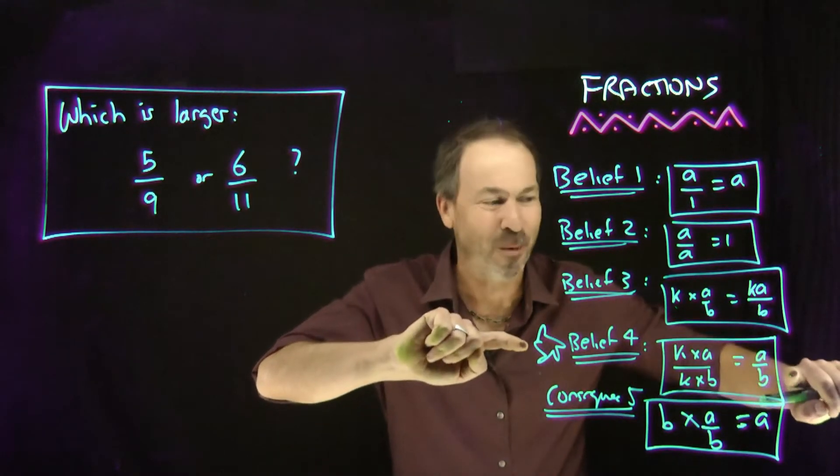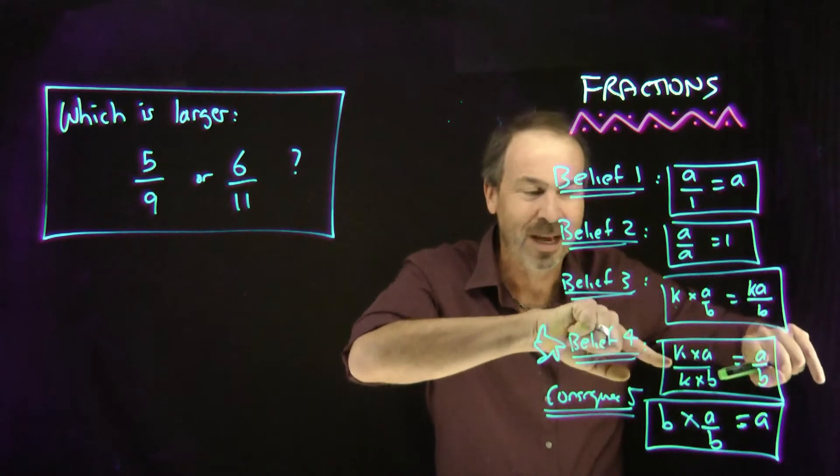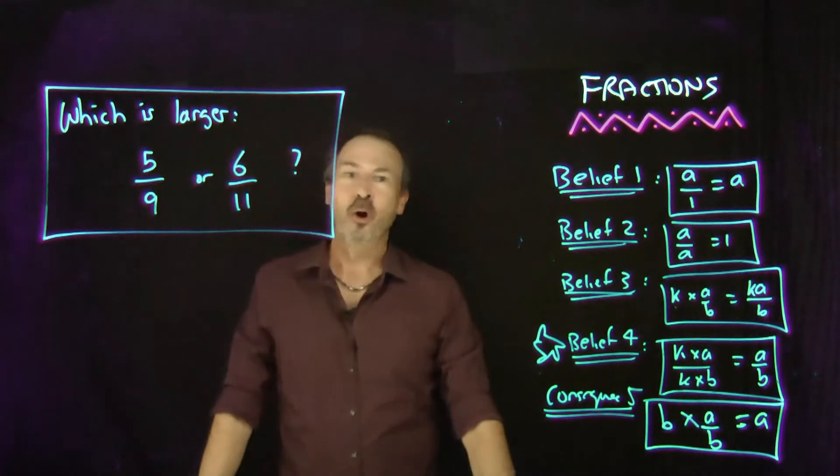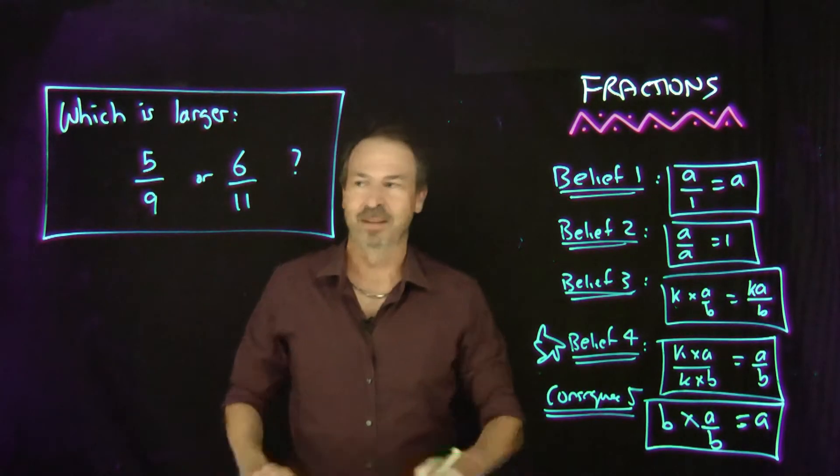Namely belief number 4. This tells me how to rewrite fractions in different ways. So I'm going to actually see if I can invoke belief number 4 to give a means to compare those two fractions, 5 ninths and 6 elevenths.